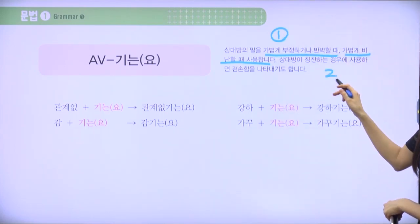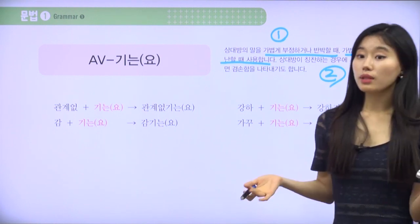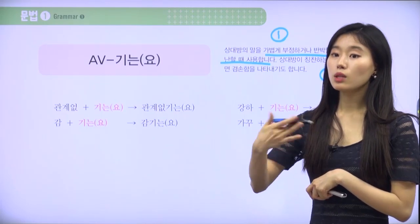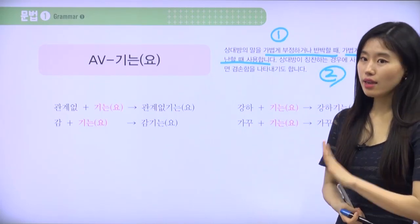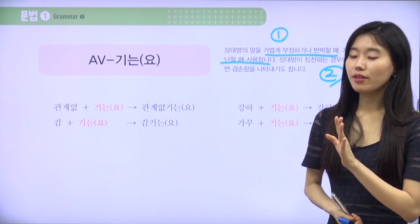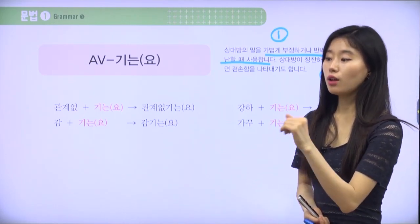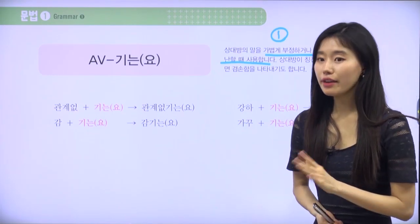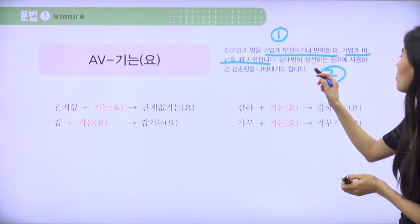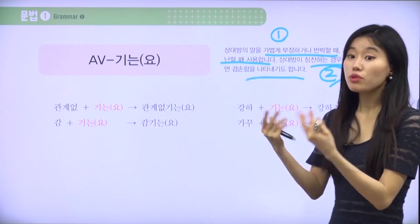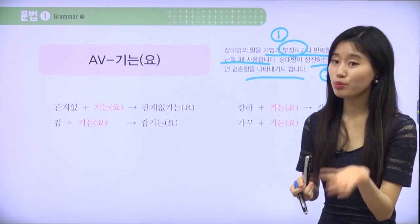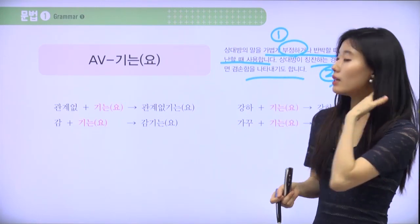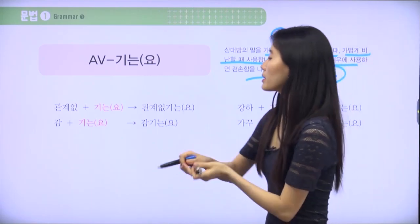Number two — a very different meaning. Sometimes 기는요 is the key expression for being humble. For example, if someone says 한국어 되게 잘하시네요 (your Korean is really good), you want to be humble so you say 아니에요, 잘하기는요. That time we still disagree — because we want to be humble. So please remember: number one is casual refutation, number two is humility. Let's look at more examples.